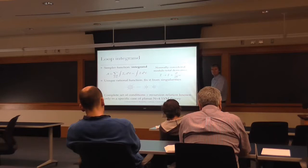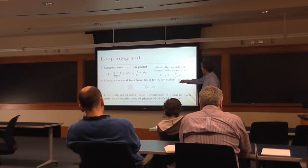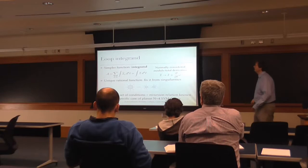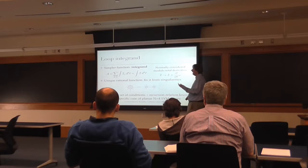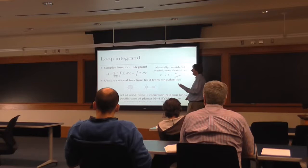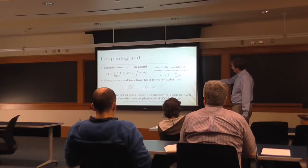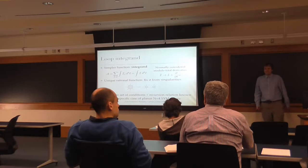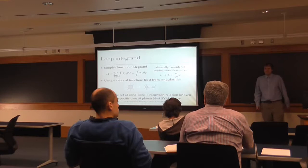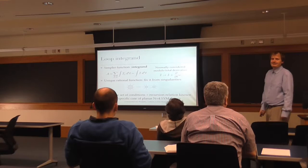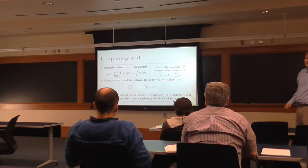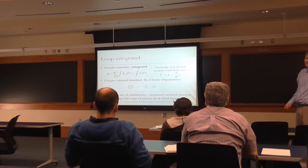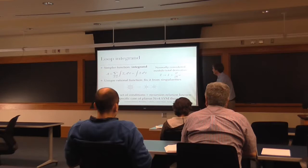The unitarity property here is: you take the loop integrand, impose a double cut — setting two propagators to zero simultaneously — and it should factorize into two sub-amplitudes. So if somebody gives me a five-loop integrand, I have to check all double-cut factorizations. If it factorizes properly everywhere, it's correct. This method of loop unitarity has been used since the 1990s by Bern, Dixon, and Kosower. There are many ways to choose the double cuts, and you have to check all of them, though a subset is normally sufficient.